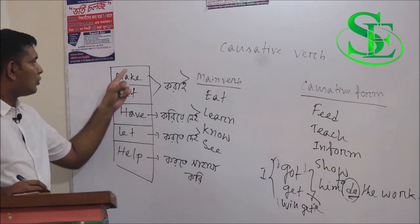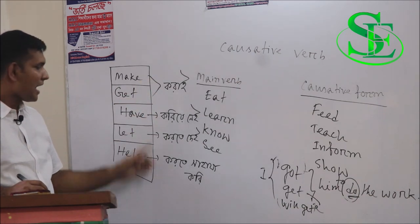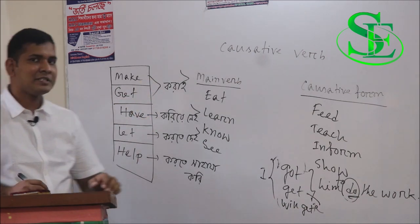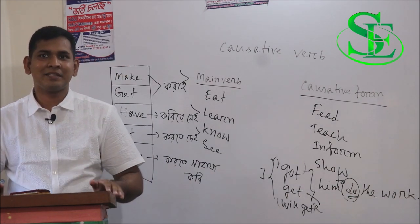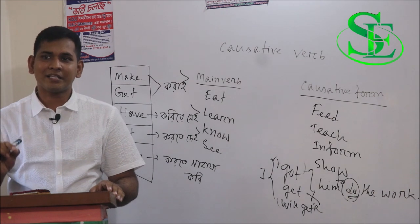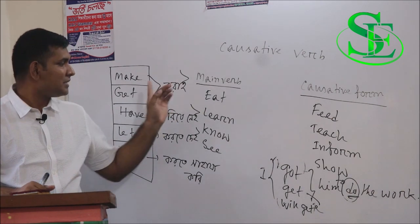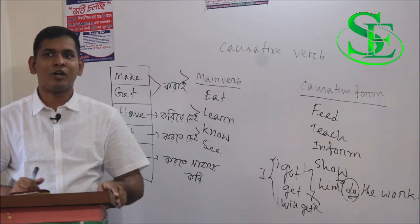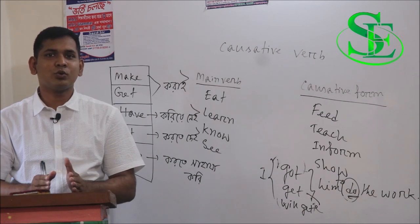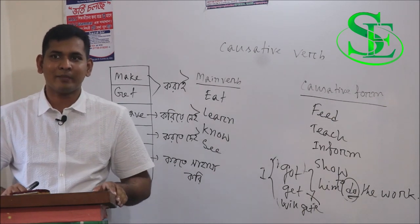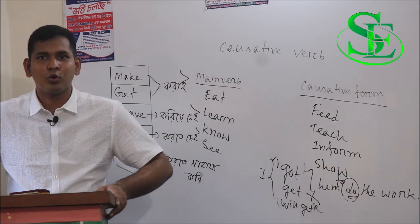Now we turn to 'have.' 'I make him do the work' means 'Ami takedie kasti karai.' 'I have him do the work' means 'Ami takedie kasti koriye nai.' So in Bangla there is a difference — 'have' is used to emphasize someone to do something for you, meaning you arrange for someone to perform the action.